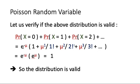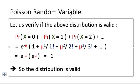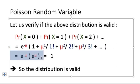For x equal to 1, the probability is e to the power minus mu multiplied by mu to the power 1 divided by 1 factorial. For x equal to 2, it is e to the power minus mu multiplied by mu squared divided by 2 factorial, and so on. The sum of all these terms equals e to the power minus mu times the Taylor expansion of e to the power mu, which equals 1. So this is a valid probability distribution.